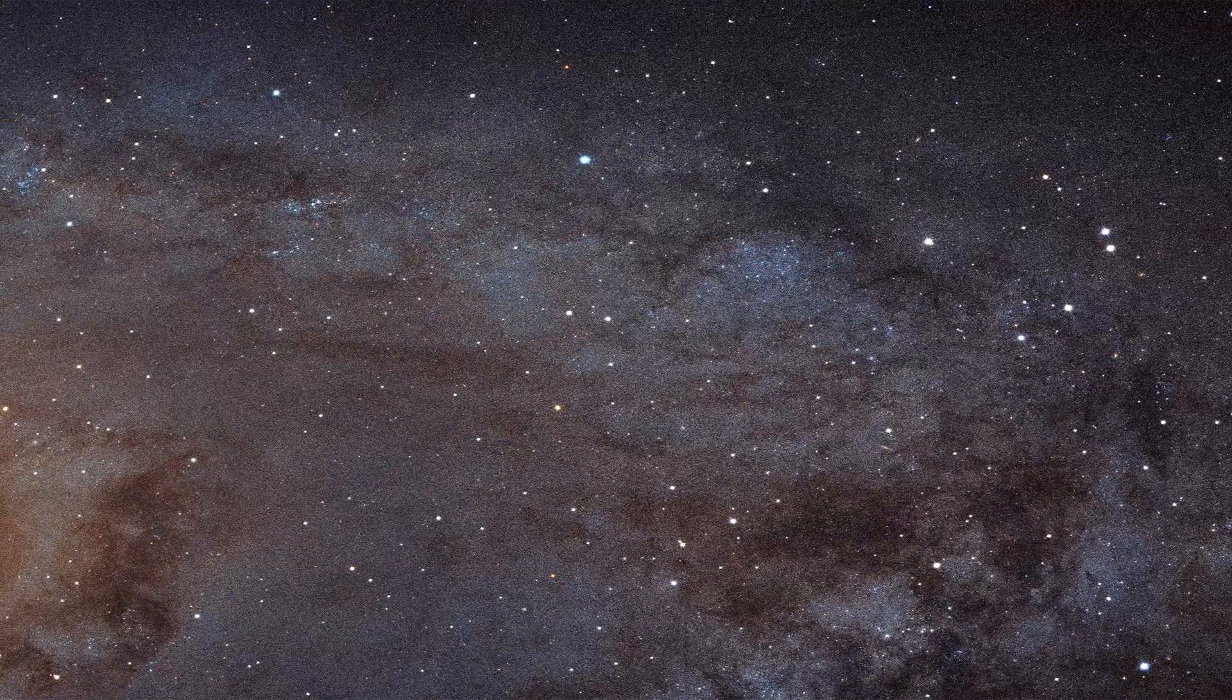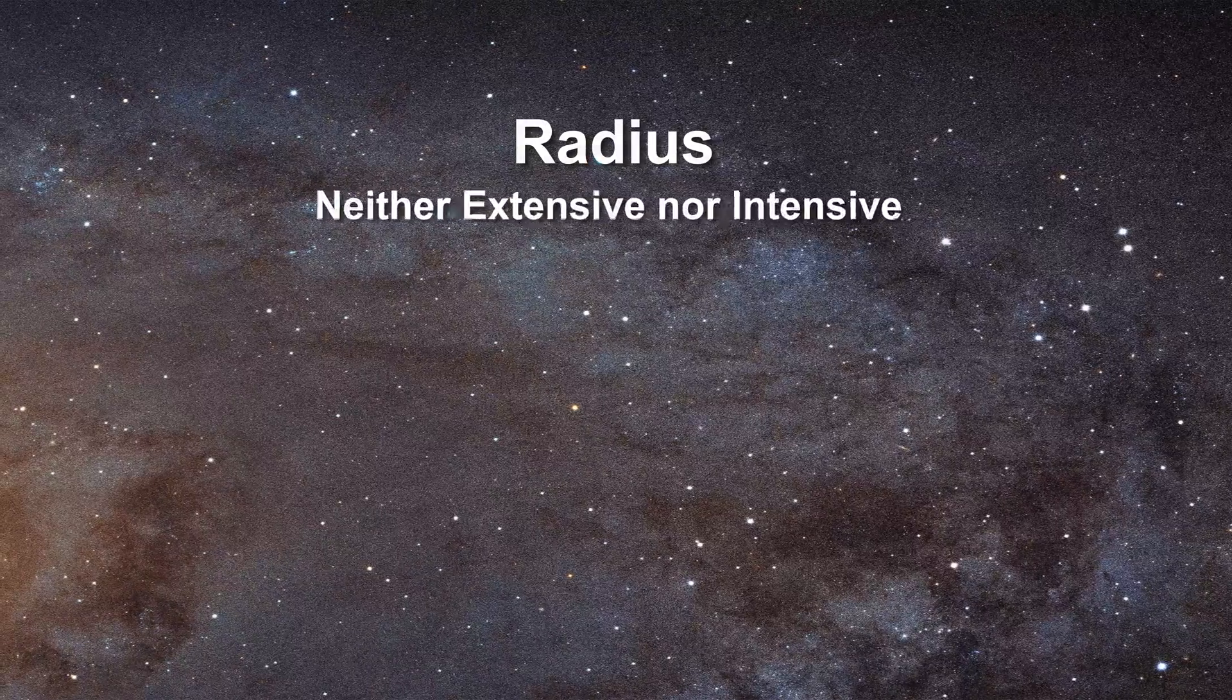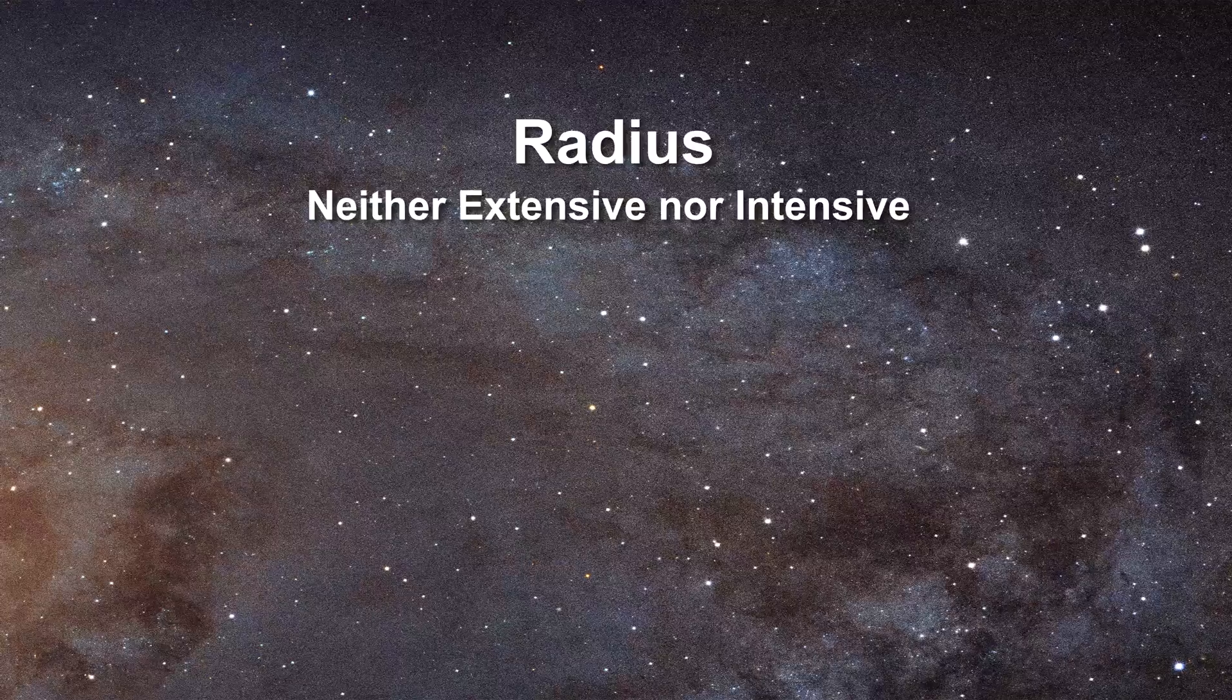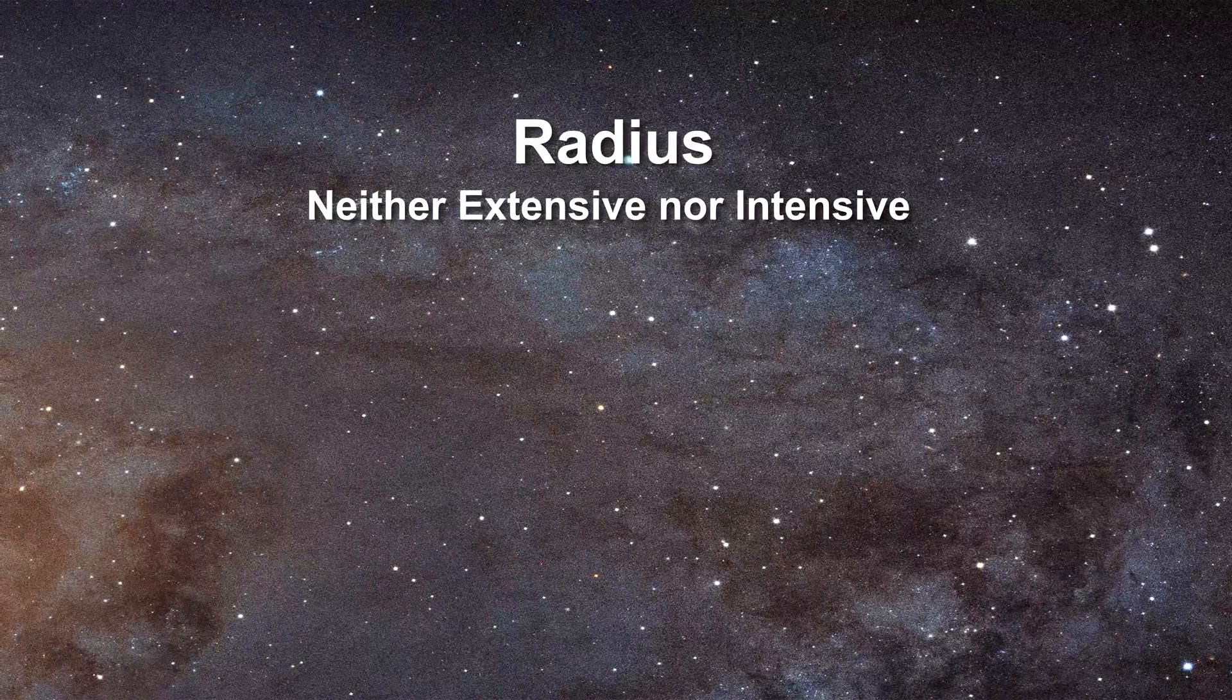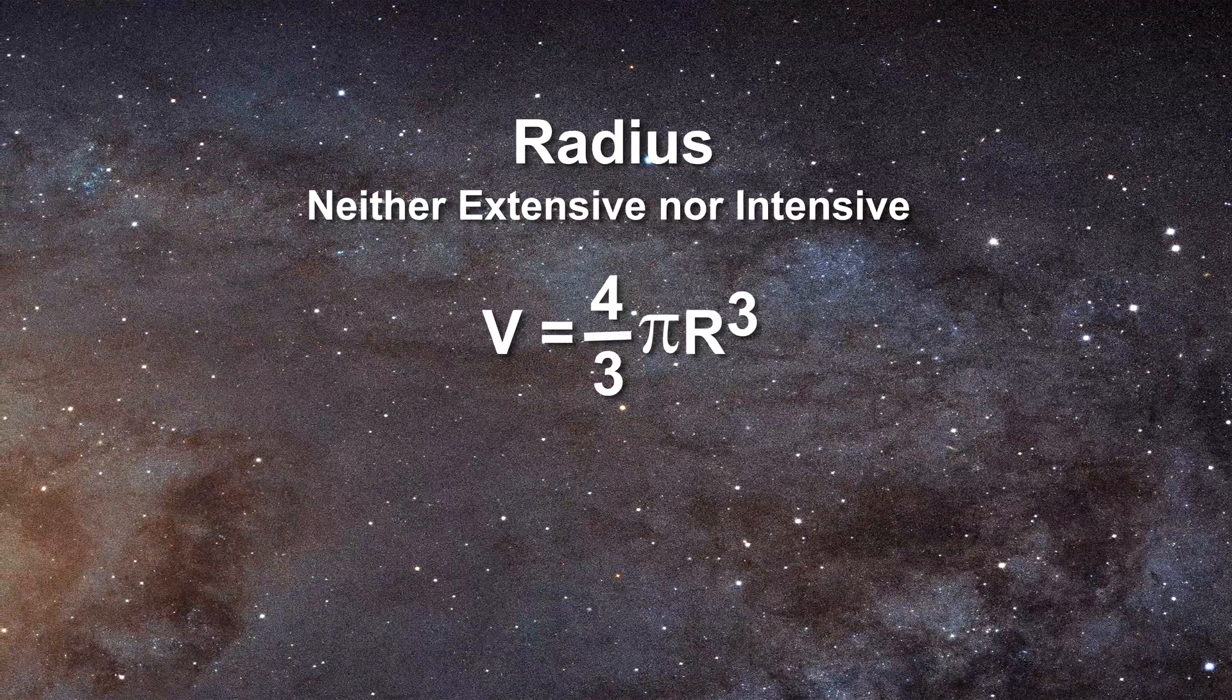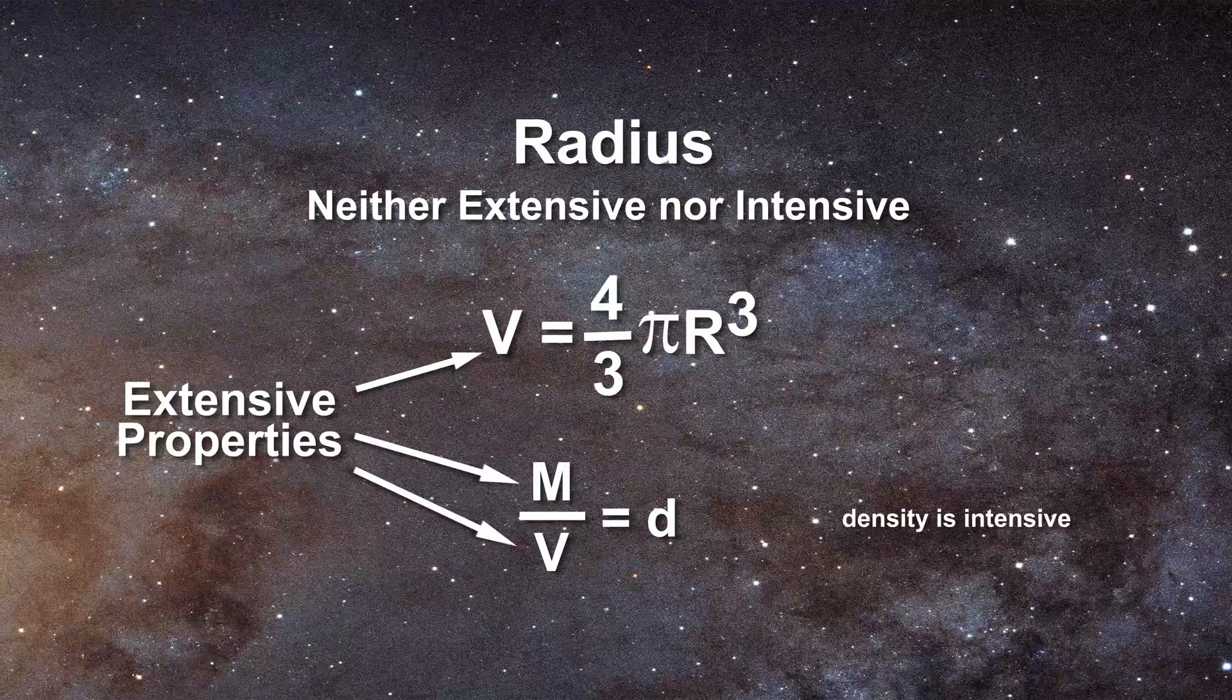Certain properties like radius of a sphere of gaseous atoms, for instance, are neither extensive nor intensive. This fact is critically important when dealing with equations in astrophysics. It is volume that is an extensive property. When mass is divided by volume, it leads to an intensive property, namely density.